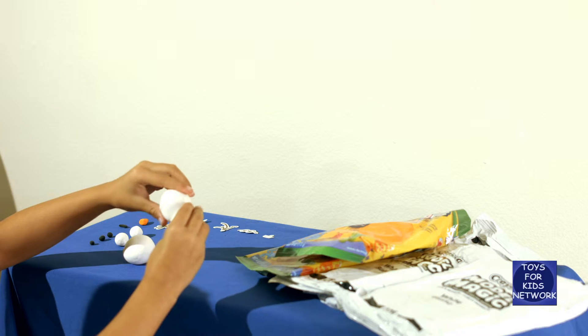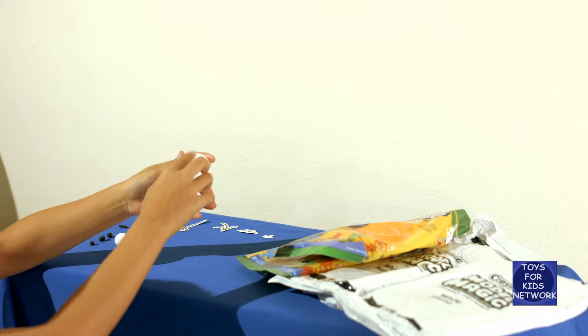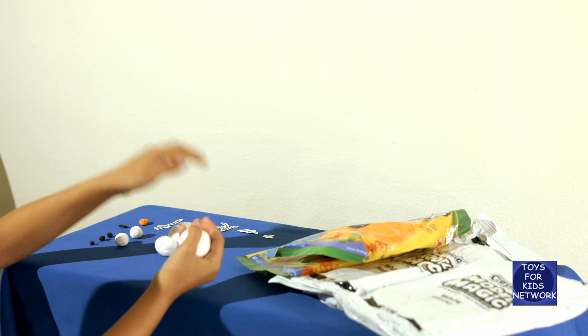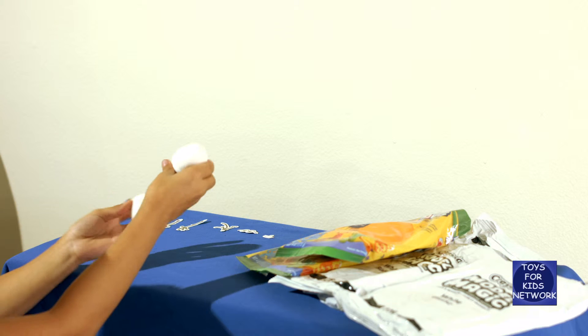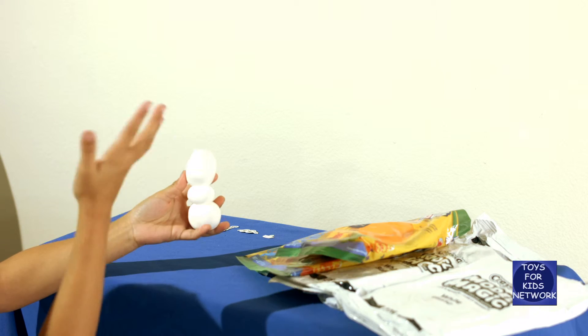So you can just stick them together. And model magic is very sticky to other model magic, so it just sticks together. Then, you make a big ball! Then, you just put it right there. And this is the start of his body!